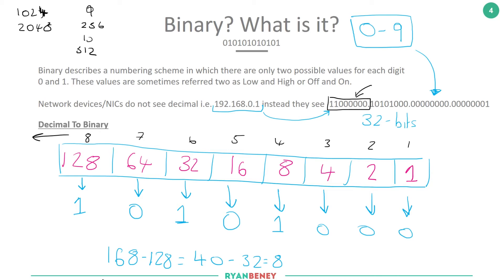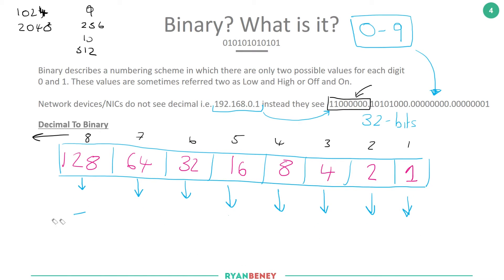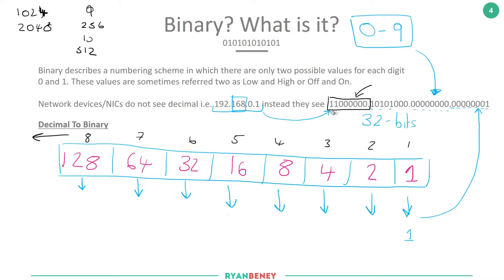The next octet is zero, so all bits are zero. For the last octet — 1 — it's all zeros apart from the final bit. So bits for 128, 32, and 8 are turned on for 168, which adds up to 168. The 128 and 64 bits are turned on for 192, which adds up to 192.